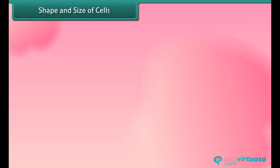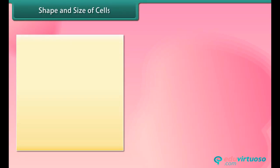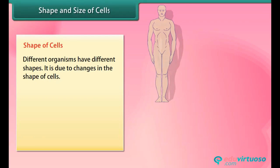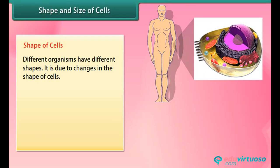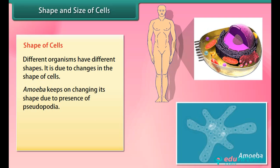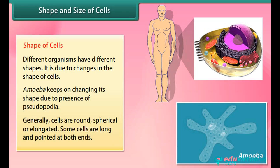Regarding the shape and size of cells: different organisms have different shapes, which is due to changes in the shape of their cells. Amoeba keeps on changing its shape due to the presence of pseudopodia. Generally, cells are round, spherical, or elongated. Some cells are long and pointed at both ends.